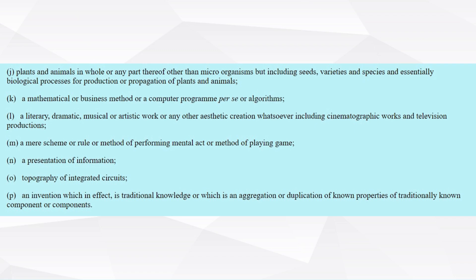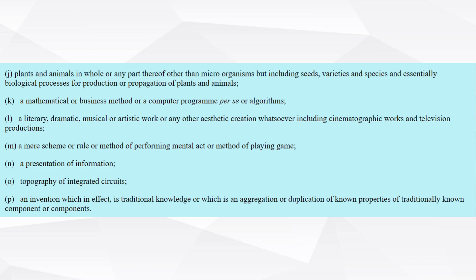Let's go through the rest of the subsections one by one, which are quite straightforward and self-explanatory. However, if you get stuck somewhere and are doubtful about the explanation of these subsections, you can write to us in the comments below and we will get back to you within 24 hours. Section 3J covers plants and animals in whole or any part thereof, other than microorganisms, but including seeds, varieties, and species, and essentially biological processes for production or propagation of plants and animals. Section 3K states that a mathematical or business method, a computer program per se, or algorithms cannot be patented under Section 3 of the Indian Patents Act 1970.